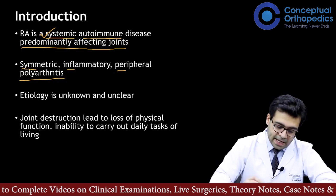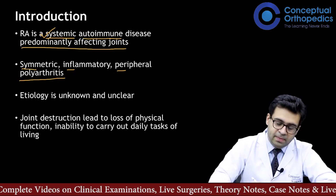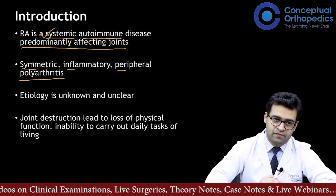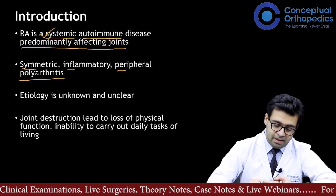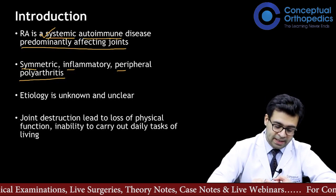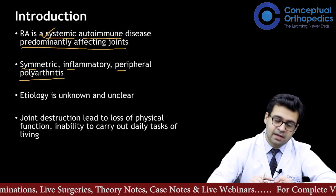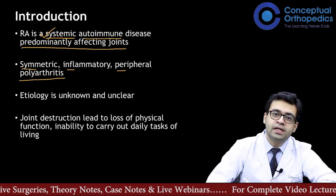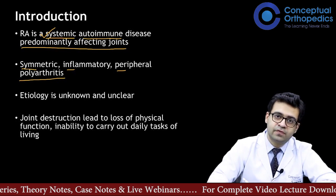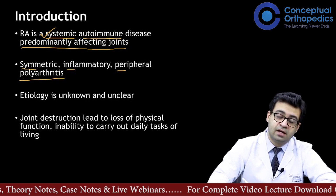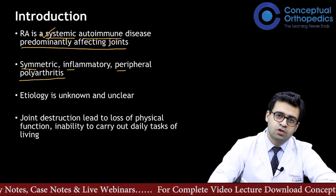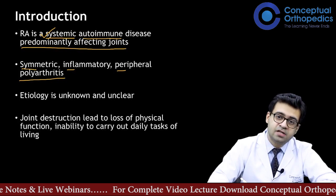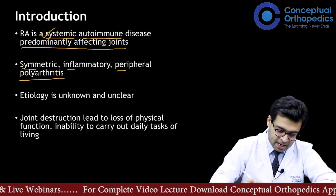Inflammatory means the five cardinal signs of inflammation: pain, swelling, redness, warmth, and loss of function. It is predominantly a peripheral arthritis, with axial skeleton involvement being very rare. The cervical spine can get involved later in disease, but it is predominantly a peripheral disease.